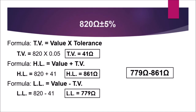The resistor must measure between 779 to 861 ohms. If the resistor measures between the lower limit and the higher limit, it can still be used. But if it measures beyond those limits, the resistor needs to be replaced. For example, if you measure 775 ohms, the resistor needs to be replaced. But if you measure 794 ohms, the resistor is still good because the measurement is between 779 and 861 ohms.